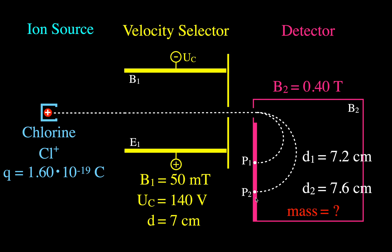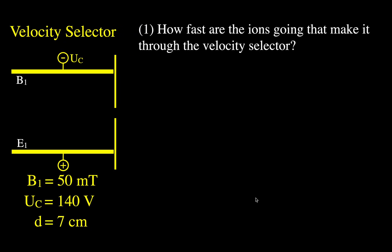We want to figure out the mass, specifically the mass number, to identify the two naturally occurring isotopes of chlorine. Starting with our velocity selector, we want to figure out how fast the ions are going that make it through. Those ions come from the ion source and travel straight through. Not all of them will come straight through — some that don't have the correct velocity will be deflected up or down.